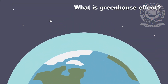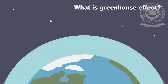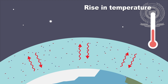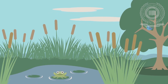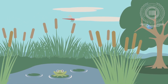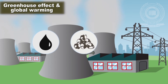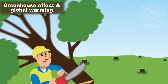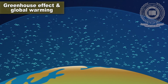The greenhouse effect is the process by which radiation from a planet's atmosphere warms the planet's surface to a temperature above what it would be without this atmosphere. Earth's natural greenhouse effect is critical to support life and initially was a precursor to life moving out of the ocean onto land. Human activities, however, mainly the burning of fossil fuels and clear cutting of forests, have accelerated the greenhouse effect and caused global warming.